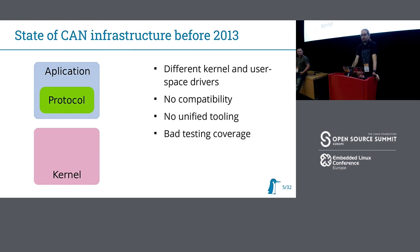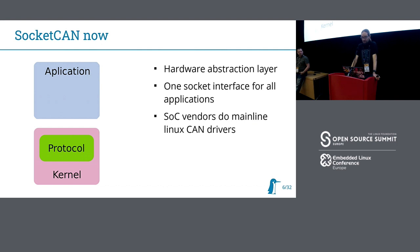So before it was in the kernel, there was no compatibility between all those different CAN implementations, no tooling because everyone invented their own library, and resulting from this there was bad test coverage. Then we moved the protocol stack into the kernel. We can make use of the in-kernel infrastructure for drivers and networking. You open a socket and this is your one and only interface between the kernel and your application. Some socket vendors brought their own drivers into mainline, and for others we and other people did.